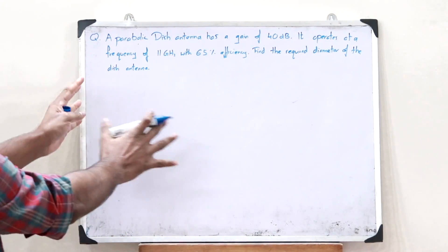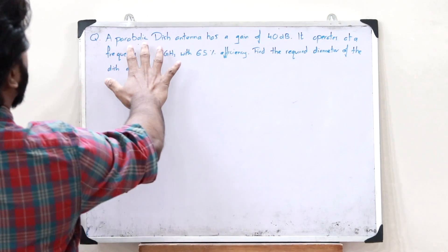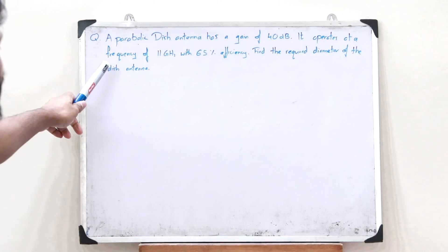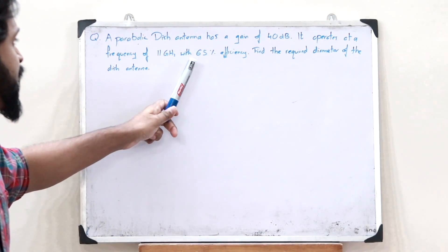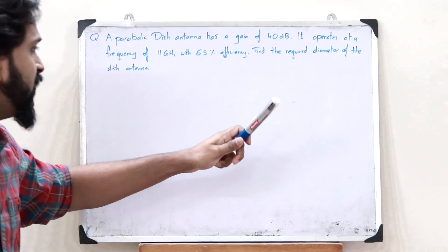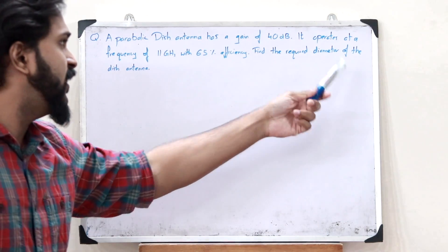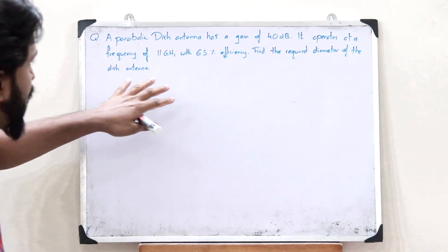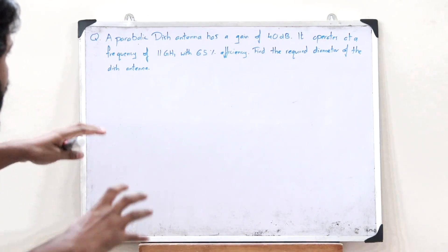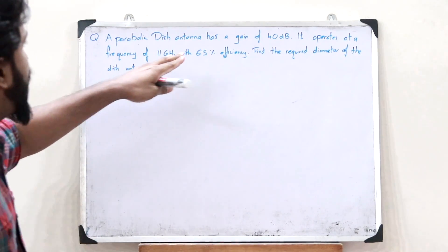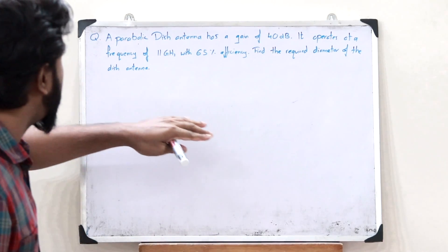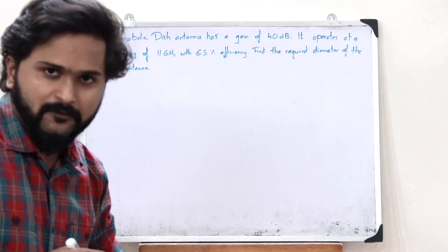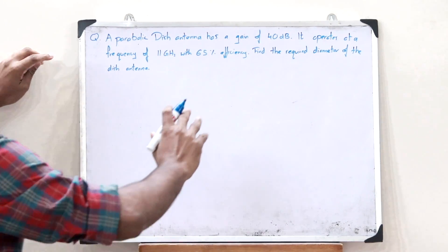Let us consider this particular question: a parabolic dish antenna has a gain of 40 decibels, operates at a frequency of 11 gigahertz with 65% efficiency — find the required diameter of the dish antenna. From this question, we have to find the diameter of a dish antenna that gives a gain of 40 dB at 11 GHz with 65% efficiency.